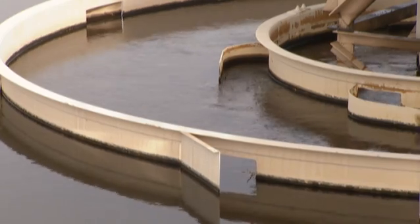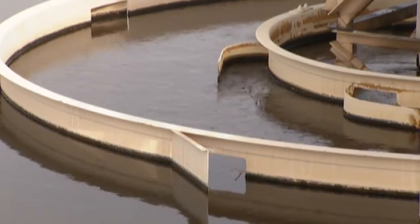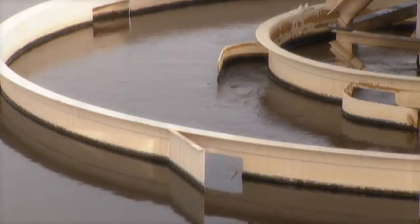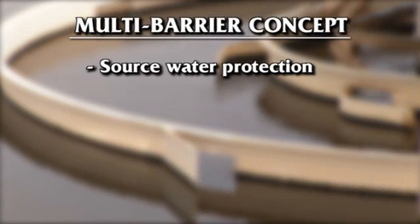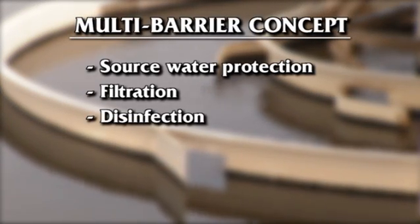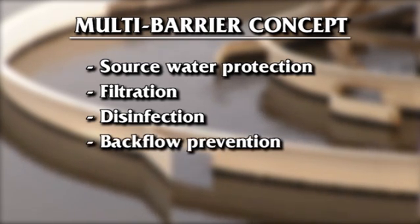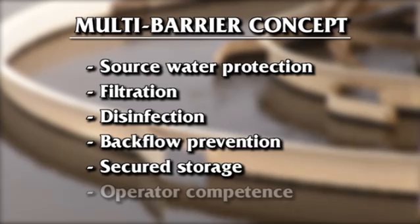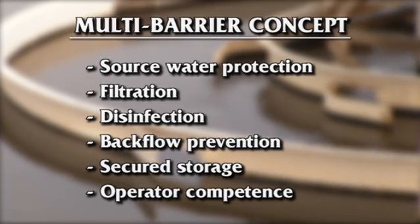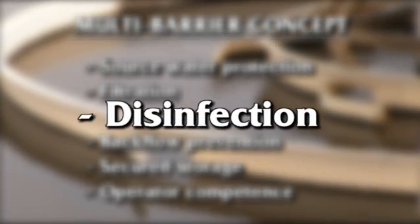Drinking water utilities rely on the multiple barrier concept to ensure safe water. That includes source water protection, filtration, disinfection, maintenance of the distribution system infrastructure — such as backflow prevention and secured storage — and operator components. This video will focus on disinfection.